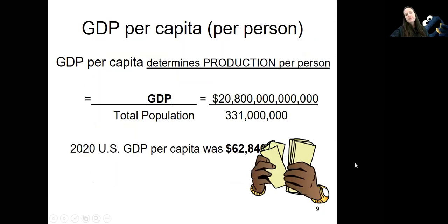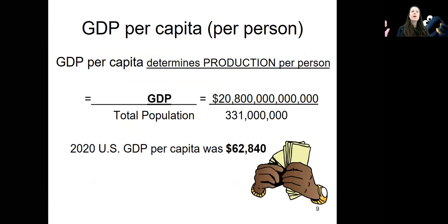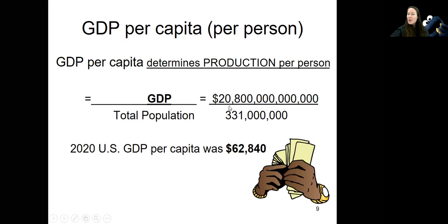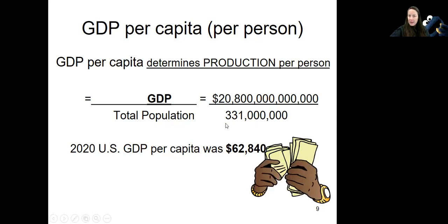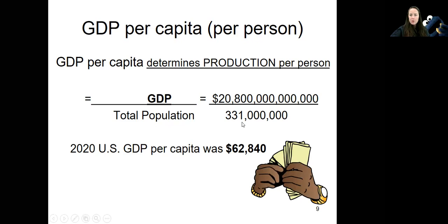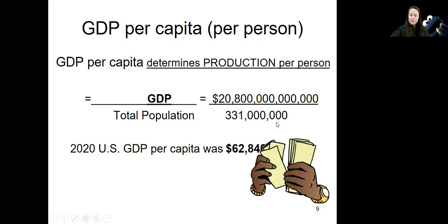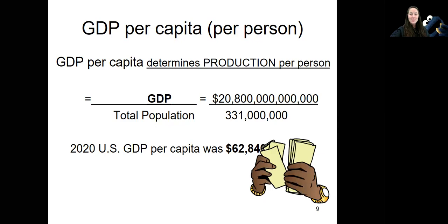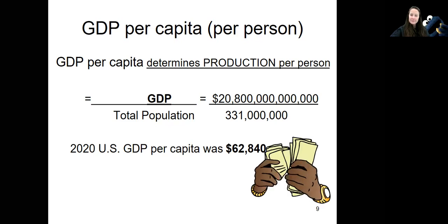GDP per capita is just production based on your population — how much each person in a country is making. Last year, our country made $21.8 trillion in products and services. Our population was 331 million. You divide production by population, and each person roughly made about $63,000 last year, which is amazing.